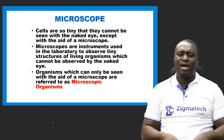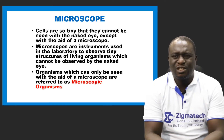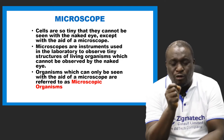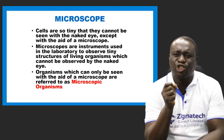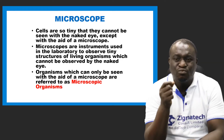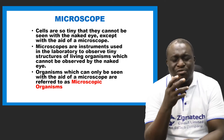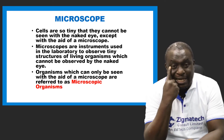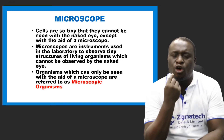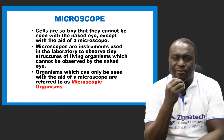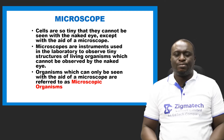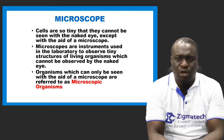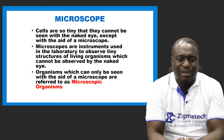Cells are so tiny that you cannot view them with your naked eyes — you need the aid of a microscope. These organisms that cannot be viewed without a microscope are called microscopic organisms. Microscopes are instruments used in the laboratory to observe tiny structures of living organisms that are not visible to the naked eye.